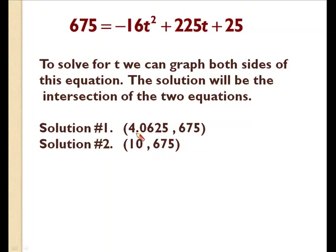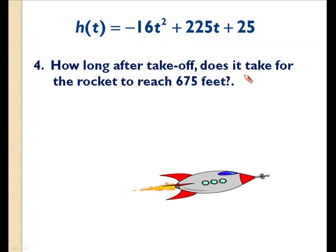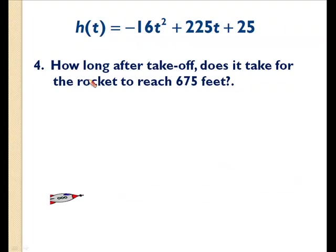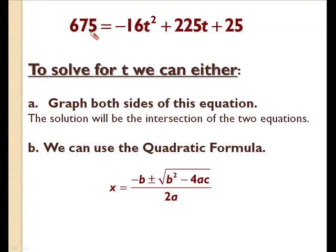Again, on the way up, the rocket takes 4.0625 seconds to get 675 feet in the air. The rocket continues to go up and then starts to come down or descend. And at 10 seconds, the rocket again is at 675 feet in the air. Back to our original question: how long after takeoff does it take for the rocket to reach 675 feet? We have two answers. It took 4.0625 seconds and it also took 10 seconds to reach that altitude. So we've just solved this equation graphically. In the next video, I'd like to use the quadratic formula to solve this equation for t. Thank you. Have a great day.